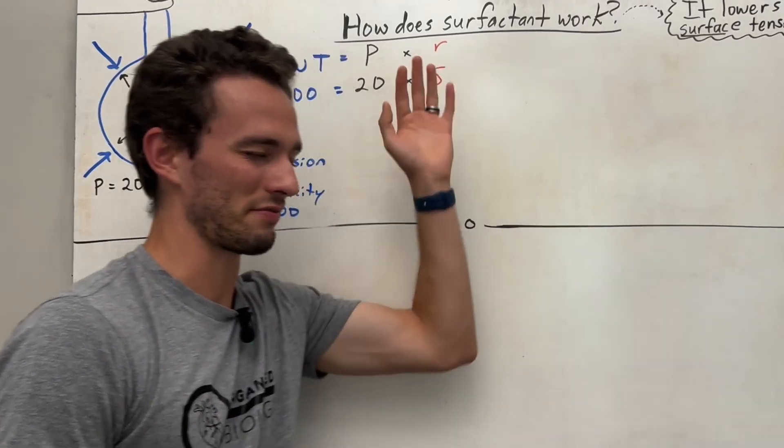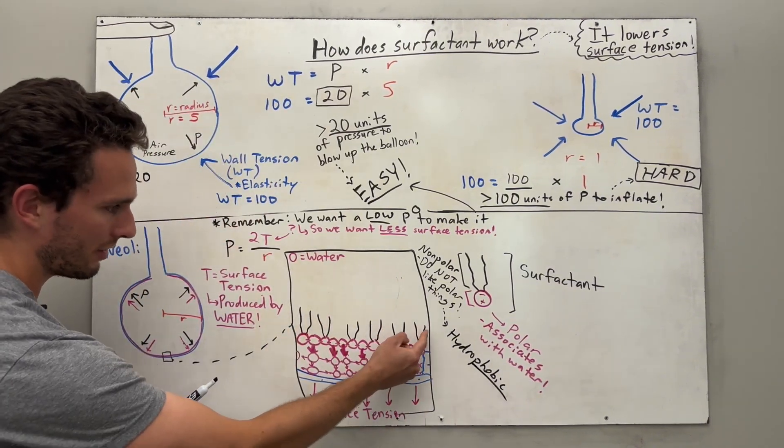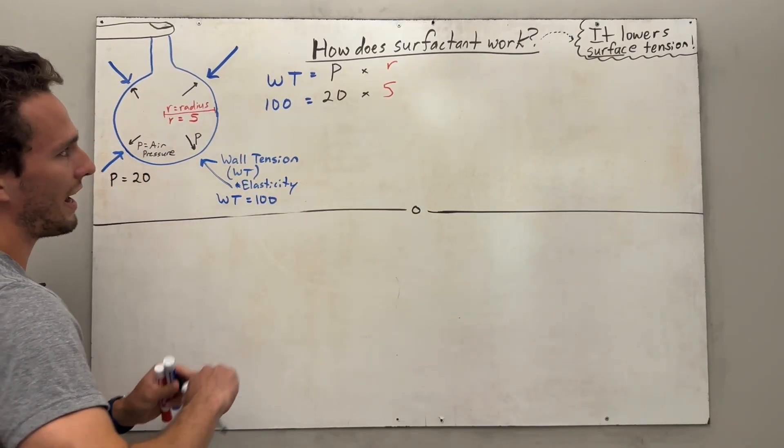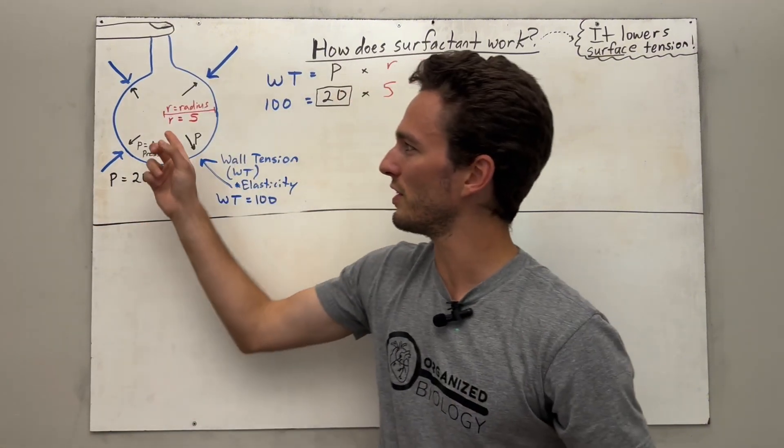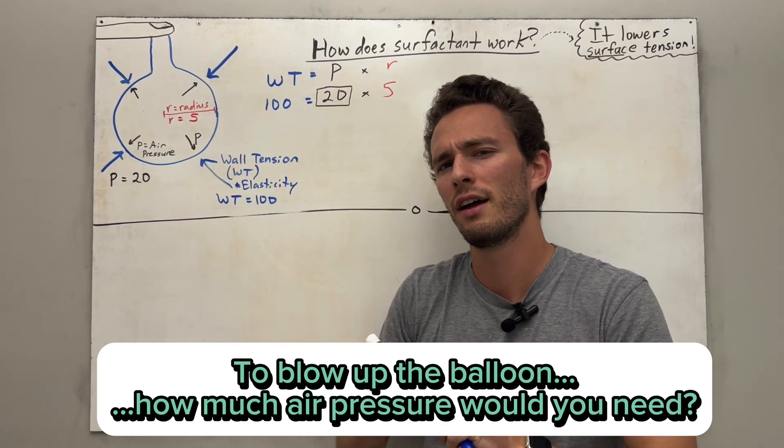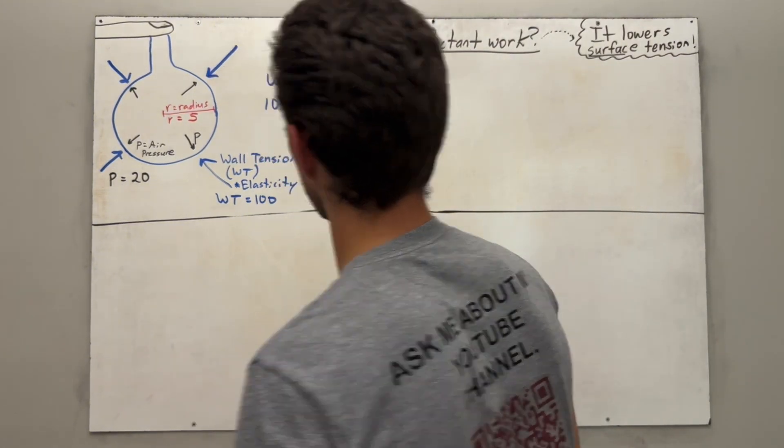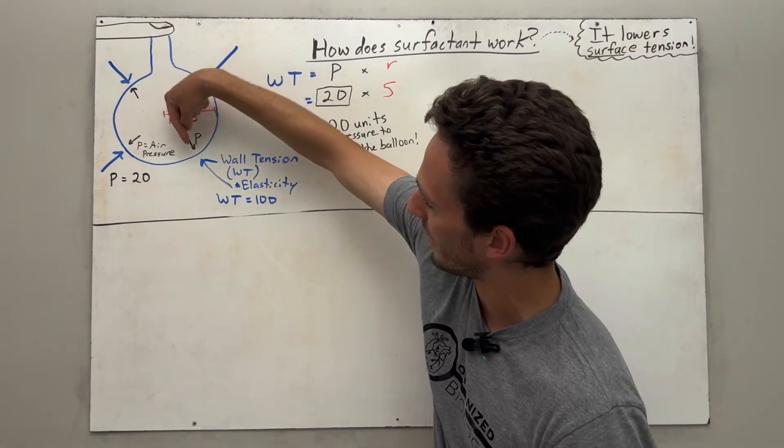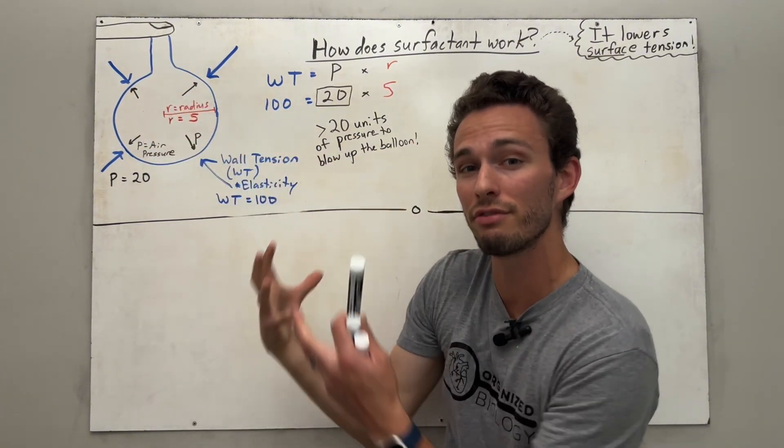Now, what does this have to do with surfactant and the alveoli? Trust me, here in just a little bit, I'm going to show you a diagram you can see right now that'll be perfectly related to what we're talking about here to understand surfactant. So trust me, we're getting there. I need you therefore to look at this number 20 representing that pressure. If I were to ask you to blow this balloon up, how much pressure would you have to put on that balloon in order to inflate it? Well, in this case, you would have to put over 20 units of pressure in order to blow up the balloon.